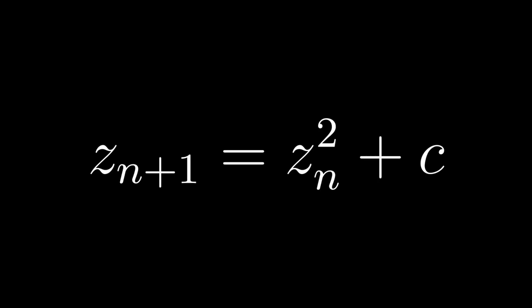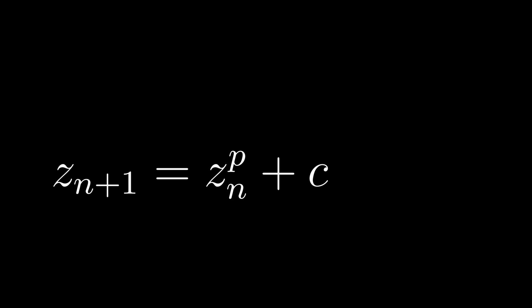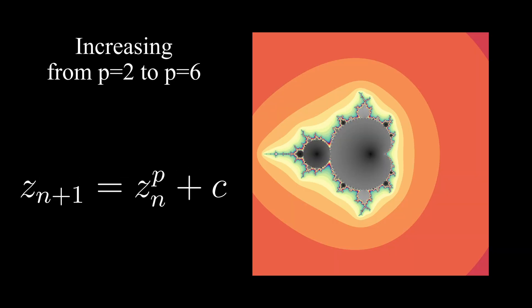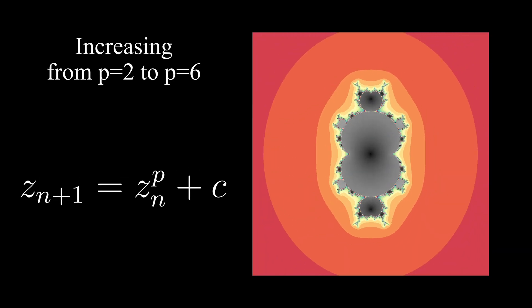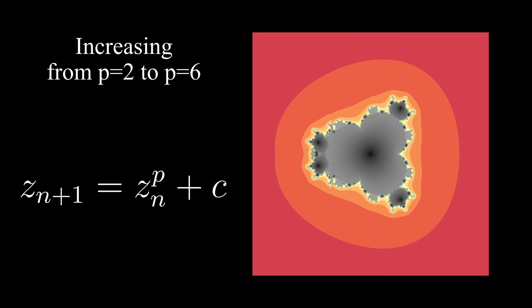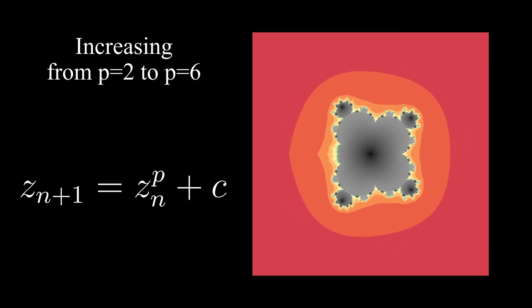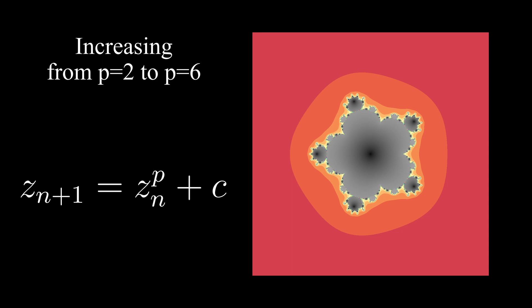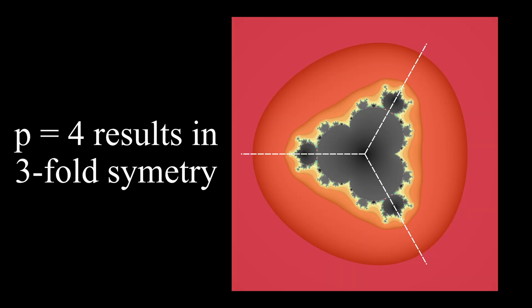We can now start experimenting with what we are given. For starters, let's change the equation we are playing with. The power p to which we are taking the z value can of course be varied. If we start increasing it, we'll see rotationally symmetric fractals with a p-1 fold symmetry for integer values of p, and sharp cutoffs for non-integer powers. These fractals are referred to as multibrot sets. Ok, cool, let's try something different instead.